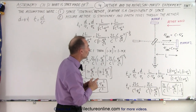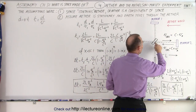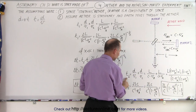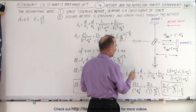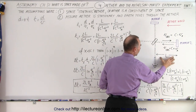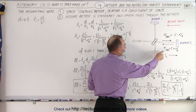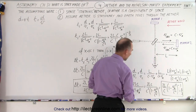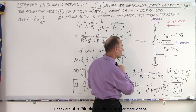T2 is the time for light to go from here to mirror two and back. So T2 is the distance L divided by the velocity. Going from here to there, it's C minus V_A, so L divided by C minus V_A.